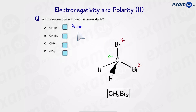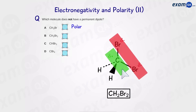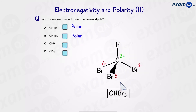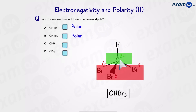Moving on to B, dibromomethane: we have two bromines and two hydrogens. Carbon is positive and bromine is negative, so there are two distinct regions — again a polar molecule. Now we have C, tribromomethane: the three bromines are at the bottom and one hydrogen goes to the top. Carbon is positive and the bromines are negative, so we have two distinct regions and a polar molecule.